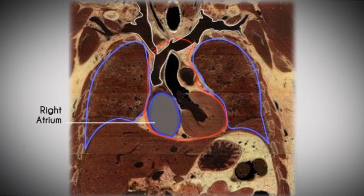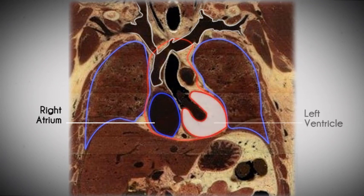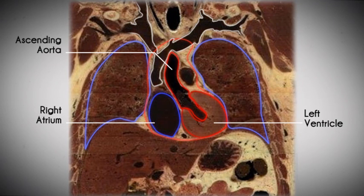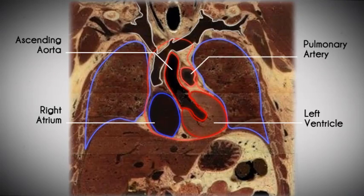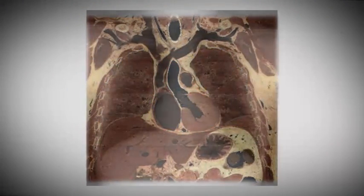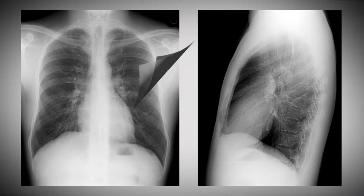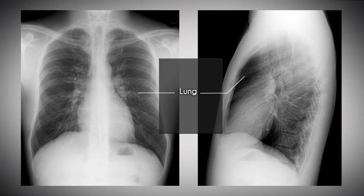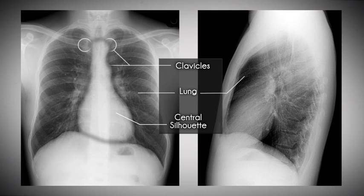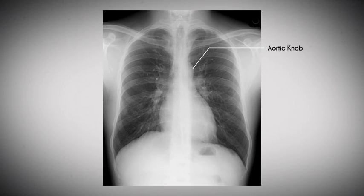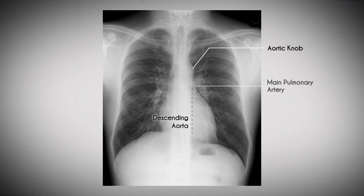Notice how the right atrium forms a part of the patient's right heart border, how the left ventricle forms a portion of the patient's left heart border, and the location where the ascending aorta comes up. Also recognize the relative location of the aortic knob or arch and the pulmonary artery. In the normal posterior-anterior and lateral chest X-ray films, the inflated lung and pleural cavity, the medial heads of the clavicle, and the central silhouette including the heart and great vessels appear. Also shown is the knob of the aorta, the descending aorta behind the heart, and the area of the left main pulmonary artery.